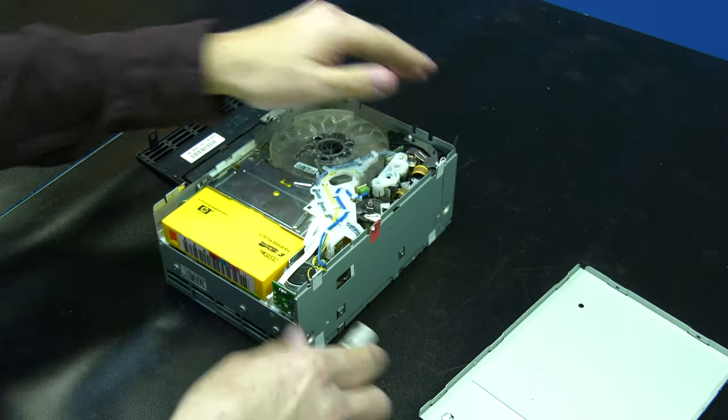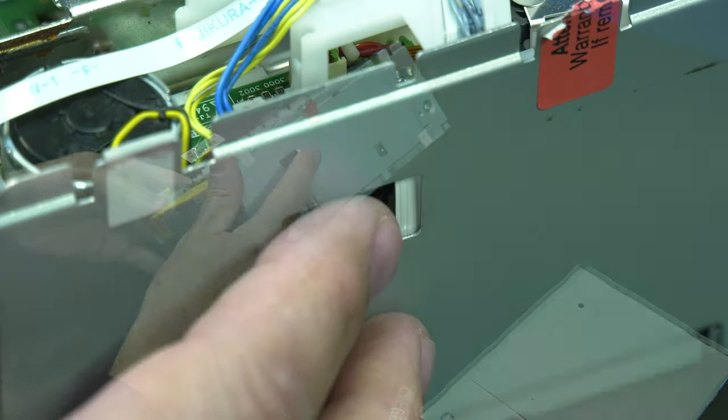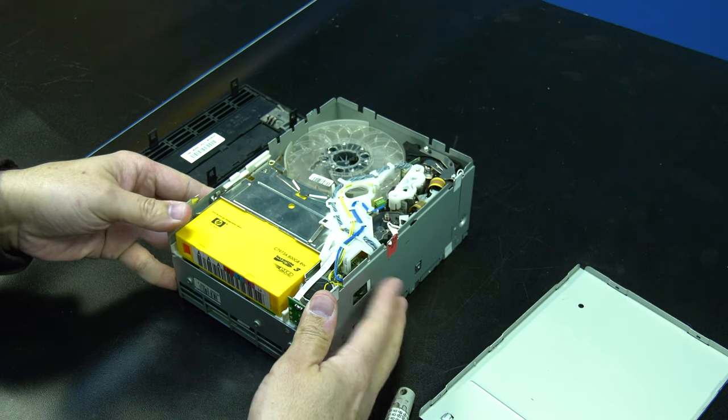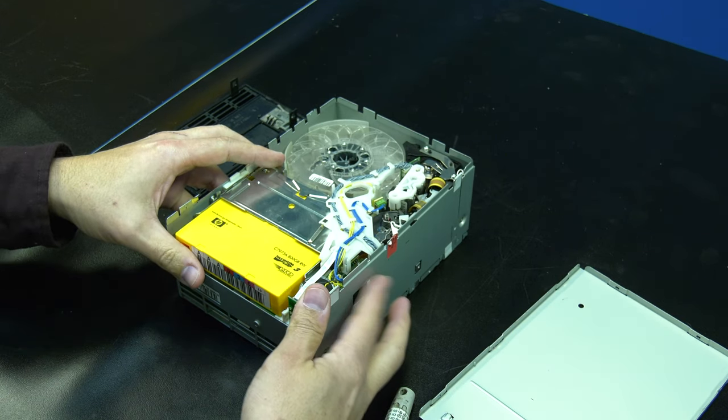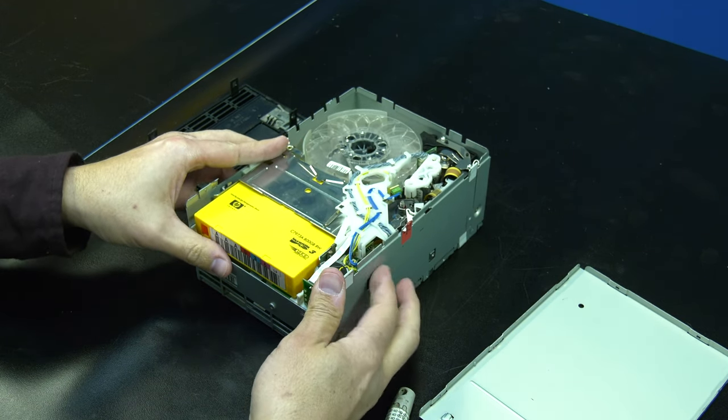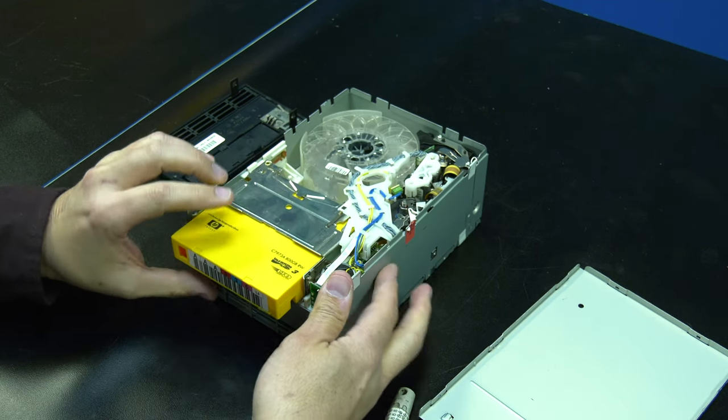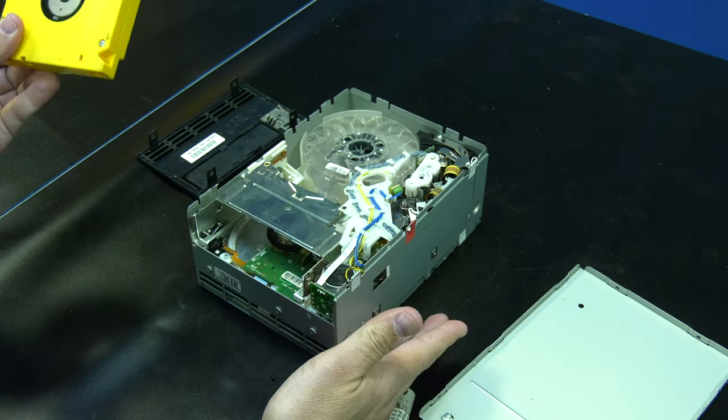Once the tape has been rewound all the way, and the screwdriver will not turn any further, locate the deck release on the right side of the drive. Spin the deck release towards the front of the drive repeatedly to raise the deck and push the tape out. Once the release cannot spin any further, the cartridge will be completely disengaged, and you can pull it out and set it to the side.